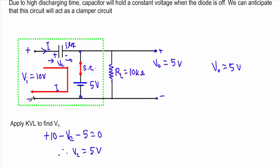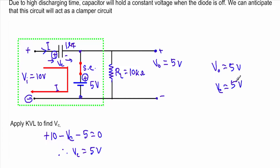Applying KVL in the green shaded rectangle: first I will encounter the 10 volt voltage source at its negative terminal, so its voltage will be positive, plus 10. After that I will encounter the capacitor at its positive terminal, so its voltage will be negative, minus Vc. After that I will encounter the 5 volt source at its positive terminal, so minus 5 equals zero. Therefore Vc will be equal to 5 volt. That means during the positive half cycle our capacitor voltage will be 5 volt and output voltage will also be 5 volt.